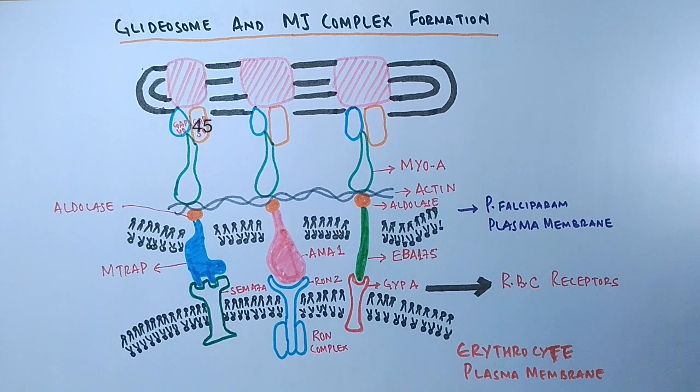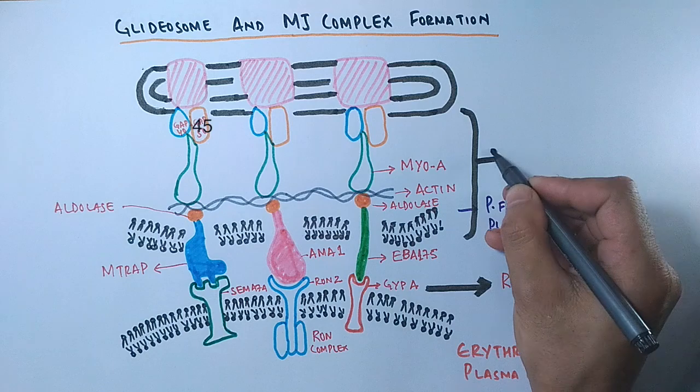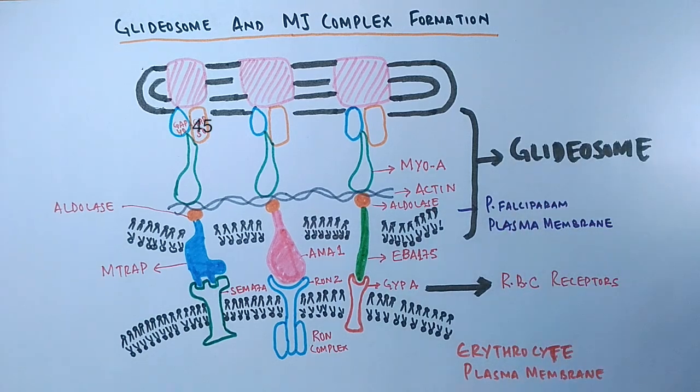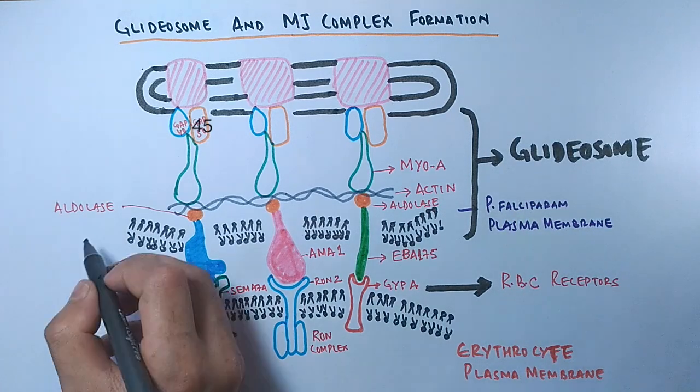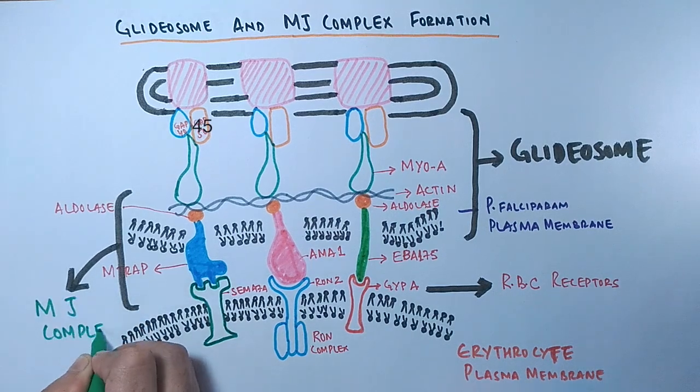Now looking at the diagram, we can see the motor complex from the Plasmodium merozoite forms the glidosome, while the linkage of ligands and receptors along with actin filaments forms the moving junction.